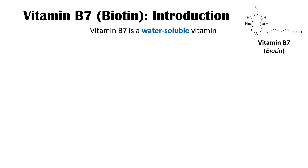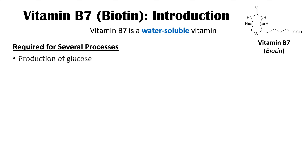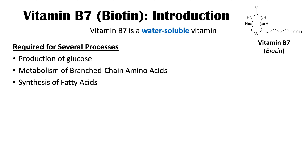Vitamin B7, or biotin, is a water-soluble vitamin. Biotin is required for several processes. It's involved in the production of glucose through gluconeogenesis — where substrates are converted into glucose for use in the body. Biotin is also involved in the metabolism of branched-chain amino acids, and in the synthesis of fatty acids, which is important for the maintenance of skin, nail, and hair health.